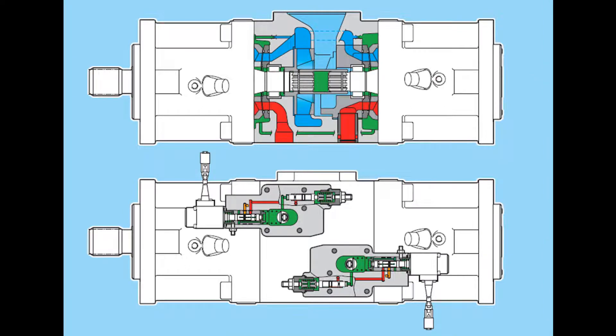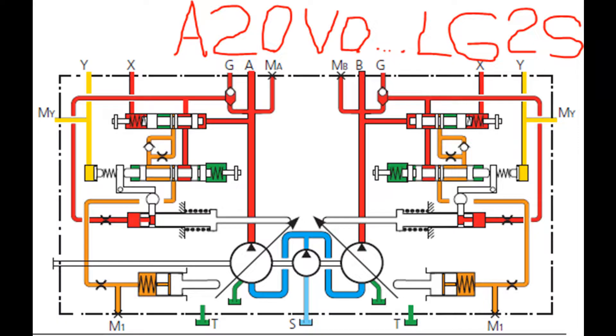RD Power Control with Pressure Cut-Off: The pressure cut-off corresponds to a pressure control which adjusts the pump displacement back to VG-min when the pressure setting is reached. This function overrides the power control — below the preset pressure value, the power function is effective. The pressure cut-off function is integrated into the pump control module and is preset to a specified value at the factory. Setting range from 50 to 350 bar.